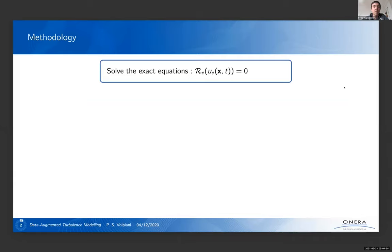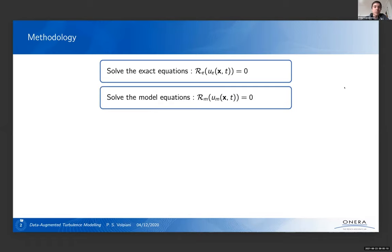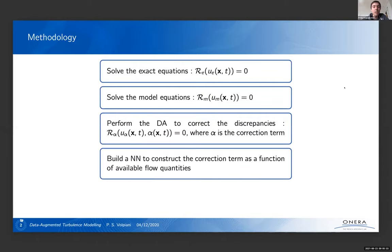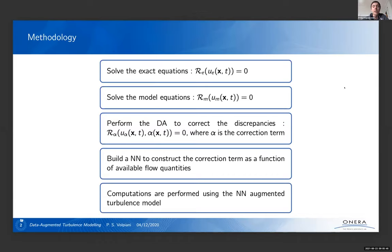And in order to do that, we need high fidelity test cases, reflecting critical physics, and also a robust assimilation environment and machine learning strategy. So let me explain a little bit how our methodology works. So first, we solve the exact equations. So RE is the Navier-Stokes equations, and then UE is the exact solution. Then we solve the model equation. So in our case, it's the RANS equations. Then we perform data assimilation to correct these discrepancies. So in order to do that, we need to include a parameter, flow field parameter in the model equations, and then minimize the cost function. Then we want to generalize this correction parameter, and we're going to build a neural network to construct the correction term as a function of available flow quantities. And then we're going to perform RANS simulations using our neural network augmented turbulence model.